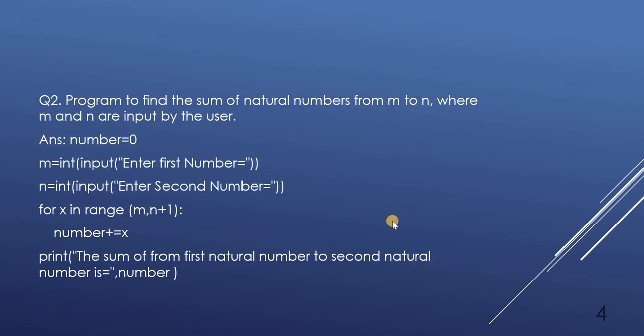Question number 2: program to find the sum of natural numbers from M to N, where M and N are input by the user. We have to show the sum of natural numbers from M to N, and M and N will be entered by the user — meaning we take two values from the user.